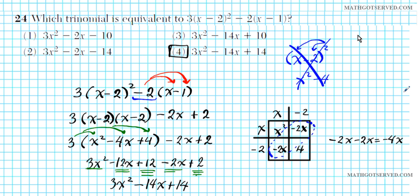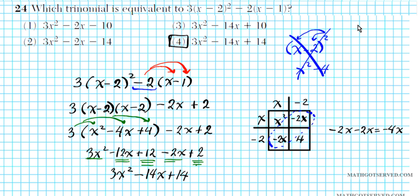For problem 24, the last one is just assessing your ability to simplify or expand polynomial expressions. When you're squaring a quantity, you have to multiply the quantity by itself — you actually have to FOIL it out. So x minus two squared is not x squared minus four; it's x minus two times x minus two. You can use the box method, which is a very good method where students make very little mistakes when multiplying polynomials. Combine like terms and you end up with option number four as your final answer.